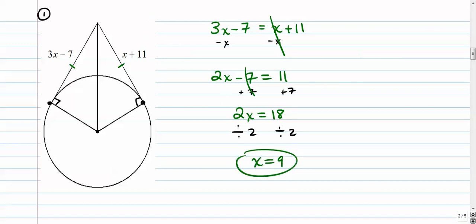If we wanted to plug that back in, if we put 9 right there, the whole thing is 20. And if we put 9 right here, 3 times 9 is 27, 27 minus 7 is 20, so that works out.